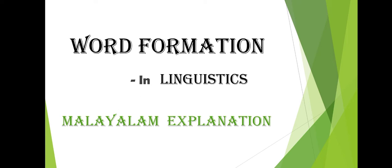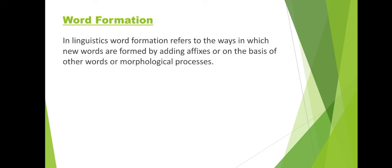What is word formation? In linguistics, word formation refers to the ways in which new words are formed by adding affixes or on the basis of other words or morphological processes. That means a stem, a base, a content word — a form of affixes. When you attach affixes to a base, you can form a new word. In morphological processes, you can also remove affixes to form a new word.